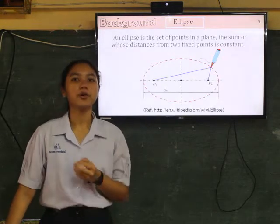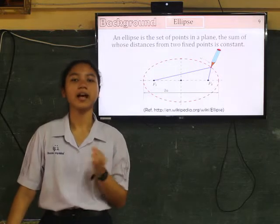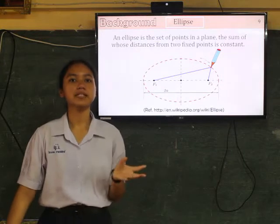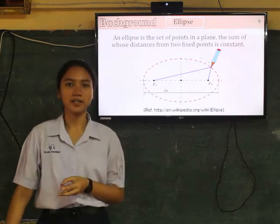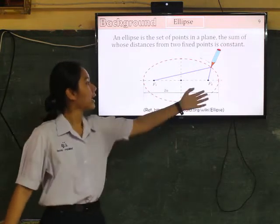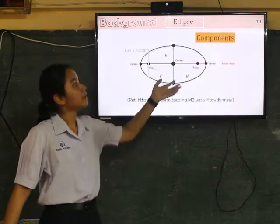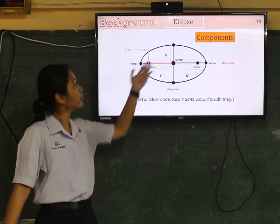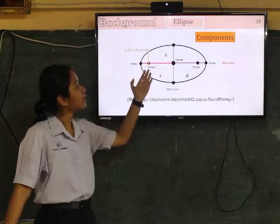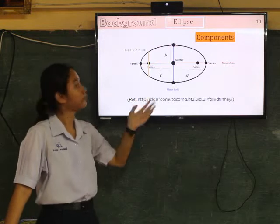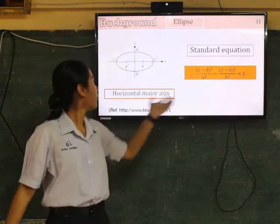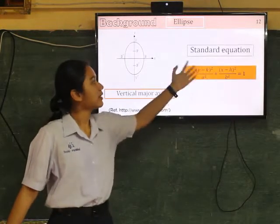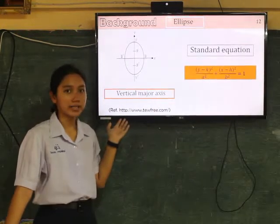And now I'm going to explain about ellipse briefly. An ellipse is the set of points in a plane, and the sum of whose distances from two fixed points is constant. And two fixed points are the foci. These are the components of ellipse. It consists of center, co-vertices, vertex, focus, and latus rectum. And this is standard form of horizontal major axis ellipse. This is standard form of vertical major axis ellipse.